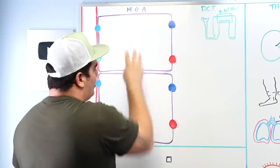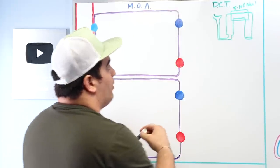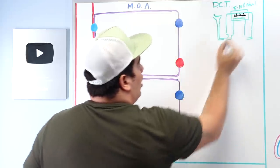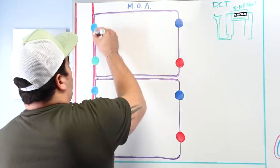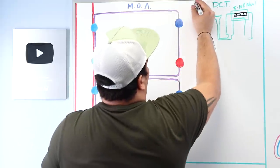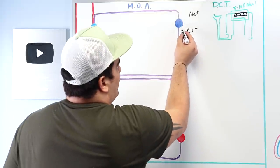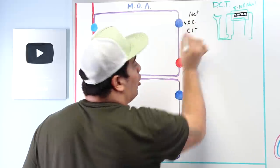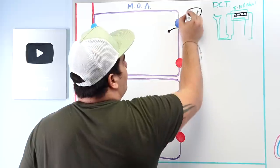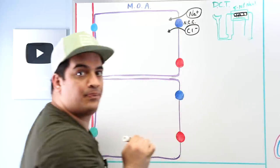Looking at the distal convoluted tubular cell: the luminal (apical) surface faces the tubule, and the basolateral surface faces the peritubular capillaries. The filtrate in this area contains sodium chloride. There's a special transporter called the NCC — sodium chloride co-transporter — which moves sodium and chloride from the tubular lumen into the tubular cell.